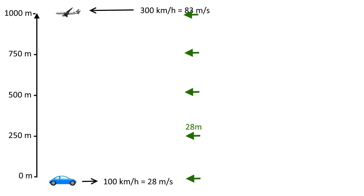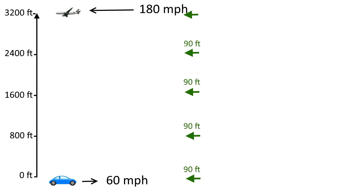In the mile system, the car moves 90 feet every second, and the same points at 800, 1600, 2400 and 3200 feet as well.